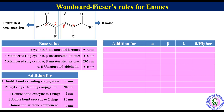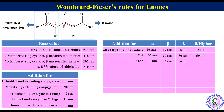Addition values for substituents depend on their position. For an alkyl substituent at alpha, beta, gamma, or delta (or higher) positions, the values are 10, 12, 18, and 18 nm respectively. For a hydroxy group: 35, 30, 50, and 50. For an acetyl group: 6, 6, 6, and 6. For a methoxy group: 35, 30, 17, and 31. For a chloro group: 15, 12, 12, and 12.